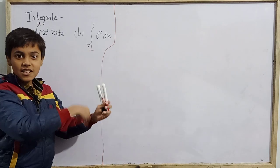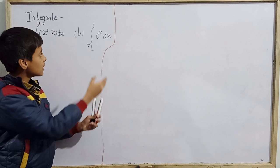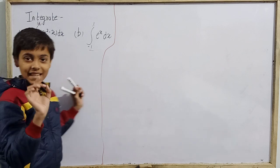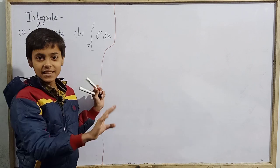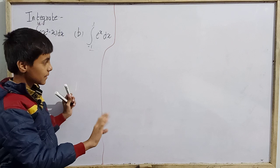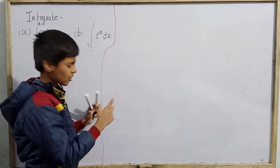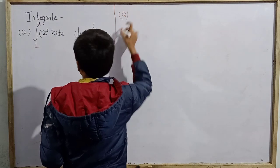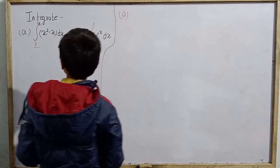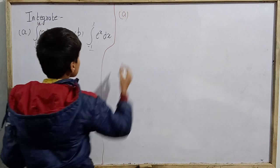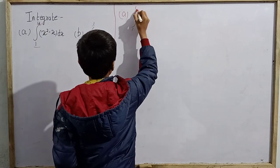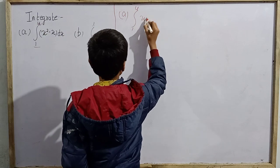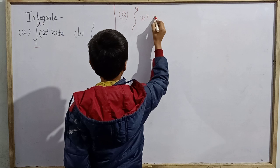When no limits are given, we call that kind of integration indefinite, where we add a constant of integration. Beginning with part (a), we have to integrate (x² - x) dx from 1 to 4.